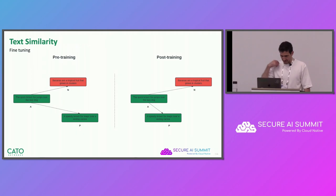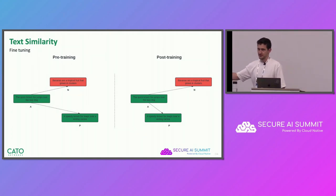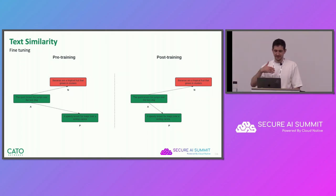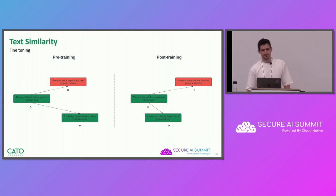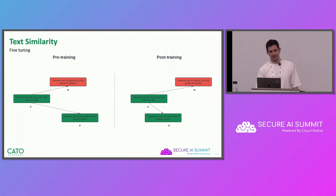We're going to create a text similarity model. A text similarity model creates a text embedding — a compact representation, in other words a vector — in a way that sentences with similar meaning get similar representations, and text with different meaning gets different representations.